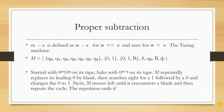An example is proper subtraction. m minus n is defined as m minus n for m greater than or equal to n, and 0 for m less than n.